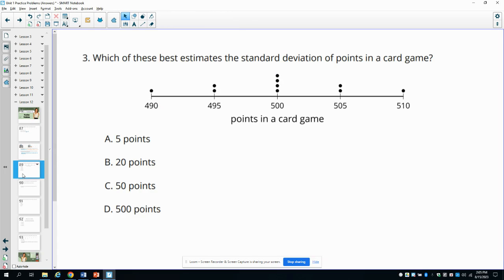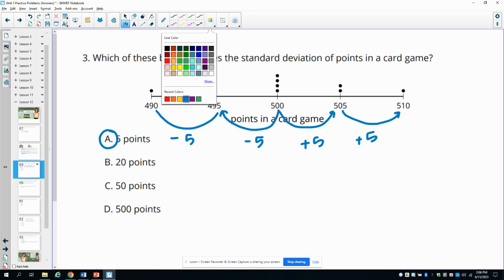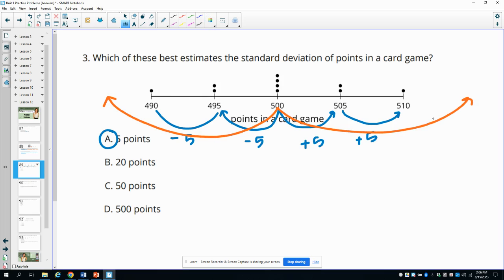Number three, which value best estimates the standard deviation for points in a card game? So now it doesn't want you to actually calculate the standard deviation just based on these, which one's the best estimate. And so when we take a look, the first one is five. So if we look here, this went down five and then this went down another five. Here it went up five and then up five. So five is a pretty good indicator. These ones would be very large because if these are all of the points in here to get 20 points, now we're going to a data point that doesn't even exist off of the grid. So and most values are within three standard deviations of the mean. And so these ones would be way too large for standard deviations for this data set.